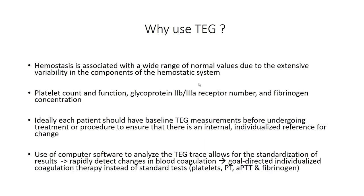The advantage of TEG is that it gives us real-time information about how these coagulation components are acting in that particular individual. Ideally, for someone coming in for an elective procedure likely to involve bleeding, we should get a baseline TEG. If they subsequently need transfusion, we repeat it and compare the two values to see if the patient has returned to baseline. The normal ranges in TEG are slightly wide, so comparing individual values twice gives us a clearer picture of that patient's baseline.